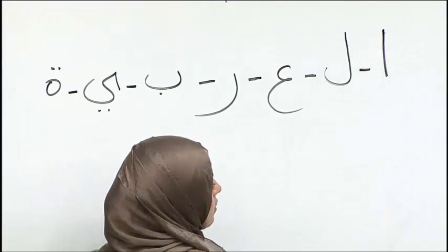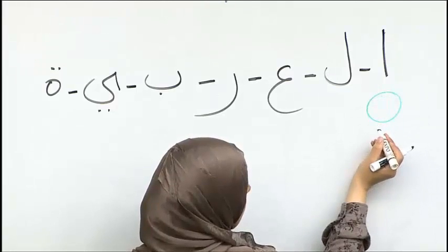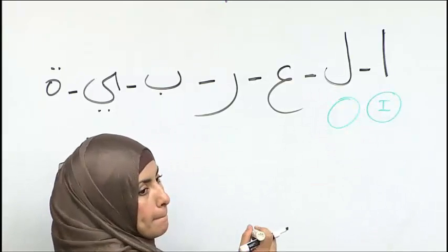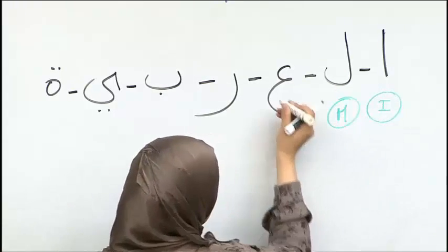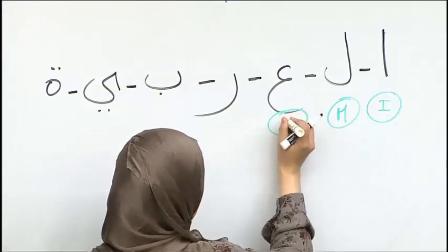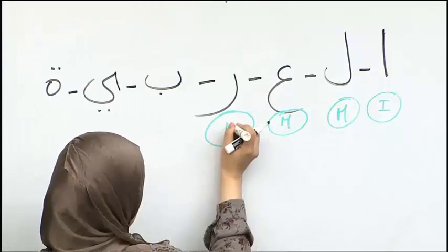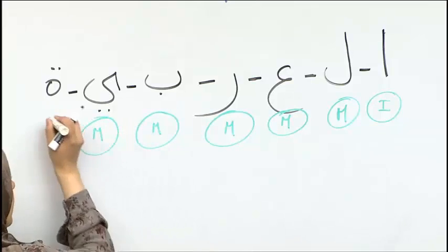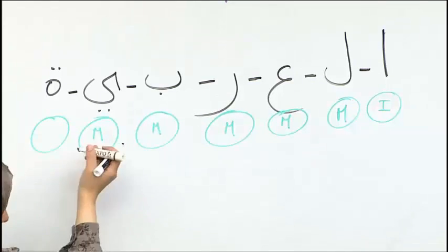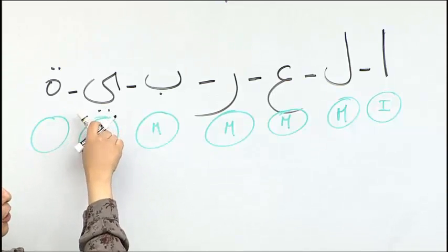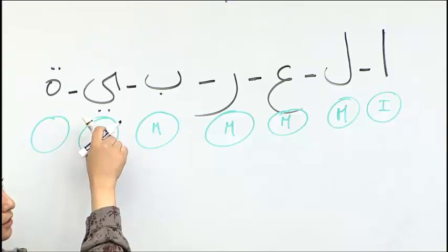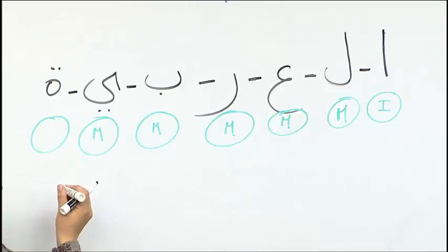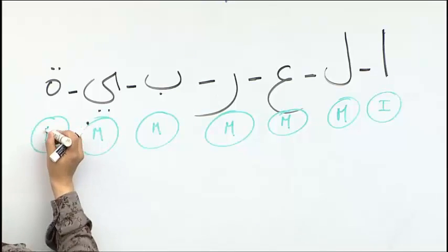What position is alif going to take? Initial. Perfect. How about lam? Medial. How about ayn? Medial. How about ra? Medial. Ba? Medial. Ya? Medial. Perfect. Or final. Medial. Because ya is not part of the letters that do not connect. It connects. And then ta is final. Perfect.